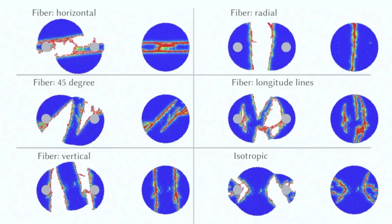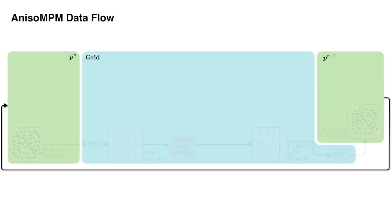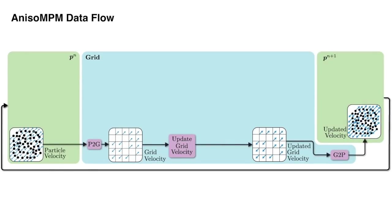In world space, the evolved damage variables weaken the material's elastic response to allow for material separation. AnisoMPM uses the traditional MPM pipeline for solving momentum and updating velocity.